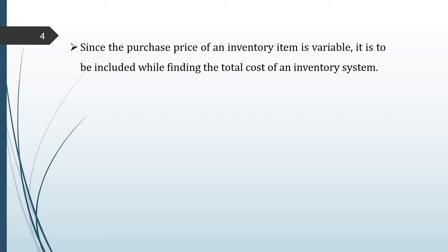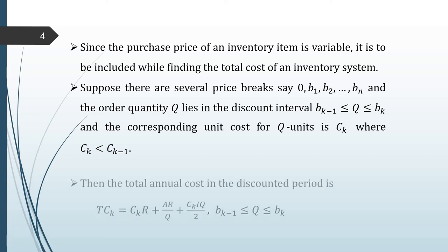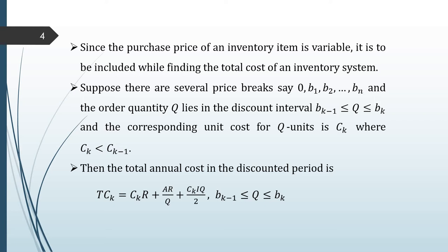Since the purchase price of an inventory item is variable, it must be included when finding the total cost of the inventory system. Suppose there are several price breaks: 0, B1, B2, up to Bn. If order quantity Q lies in the price break Bk-1 to Bk, the corresponding unit cost is Ck, where Ck is less than Ck-1. Then the total annual cost in the discounted period is TC_k = C_k·R (purchase cost) + A·R/Q (ordering cost) + C_k·I·Q/2 (holding cost), where Q lies between Bk-1 and Bk.